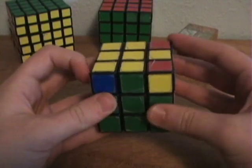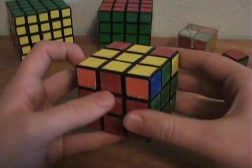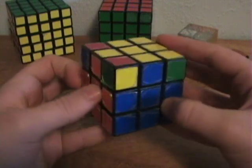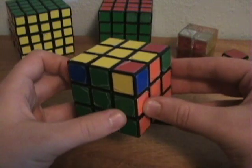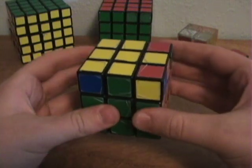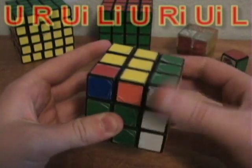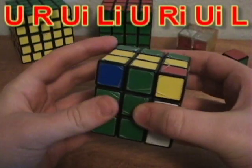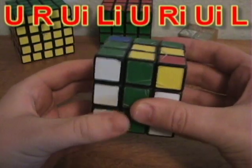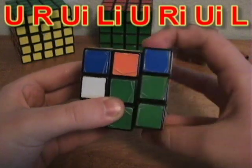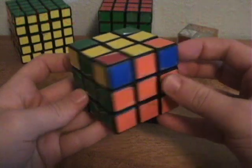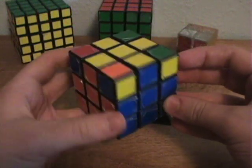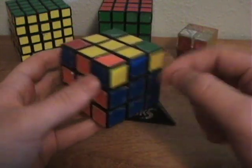Look for a corner that is already in place. Now in this case there are no corners. In order to get one in place, do the algorithm U R U I L I U R I U I L. And then just look around the cube until you find them. Here is one in place.